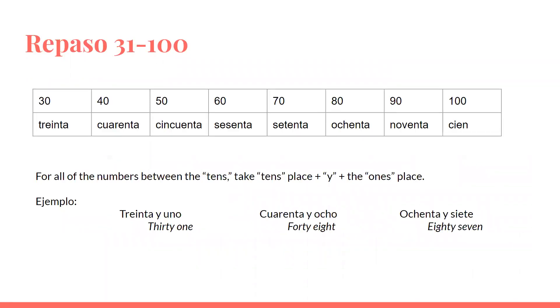And then 31 to 100 — these are the tens places: 30, 40, 50, 60, 70, 80, 90, 100.